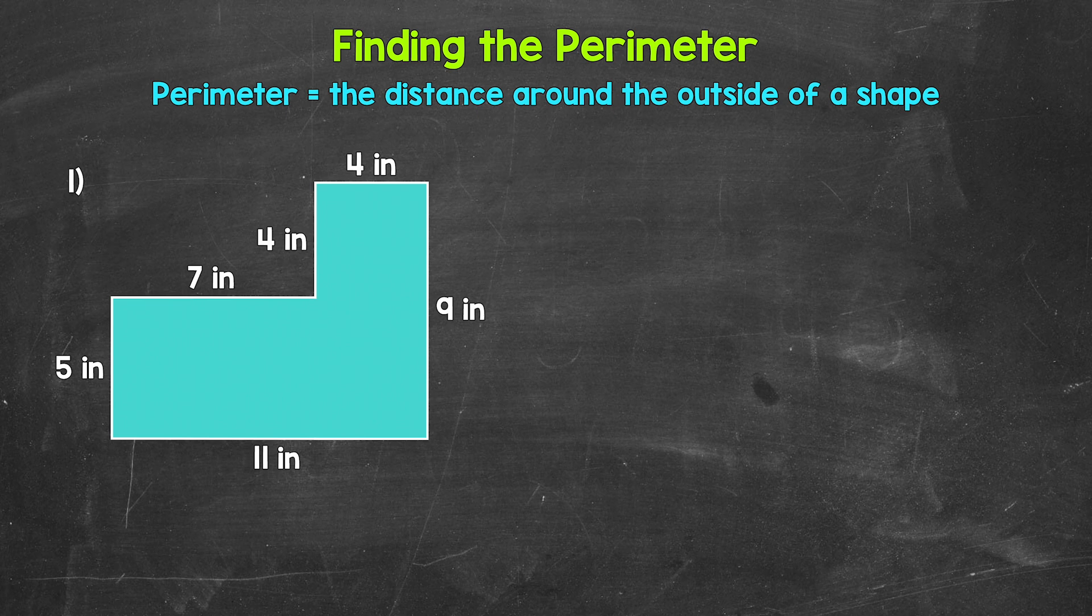So when we find the perimeter of something, we add all of the side lengths. In this video, we will go through two examples together and then you'll try a practice problem on your own.